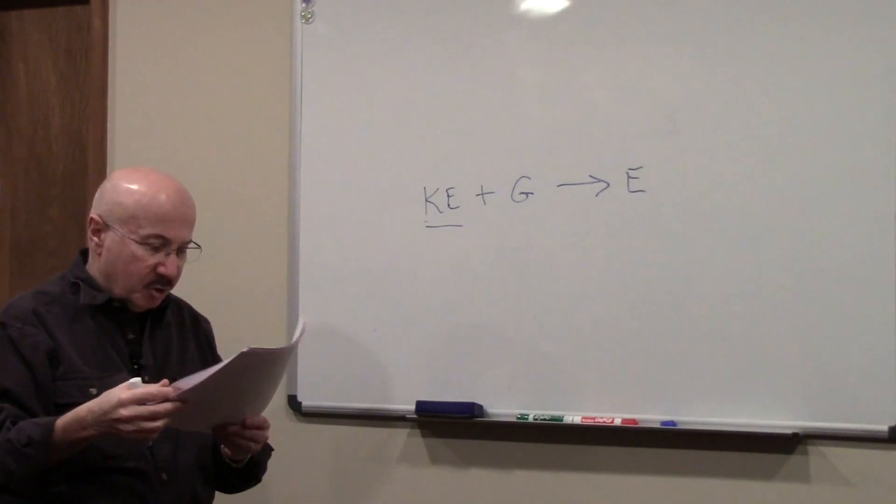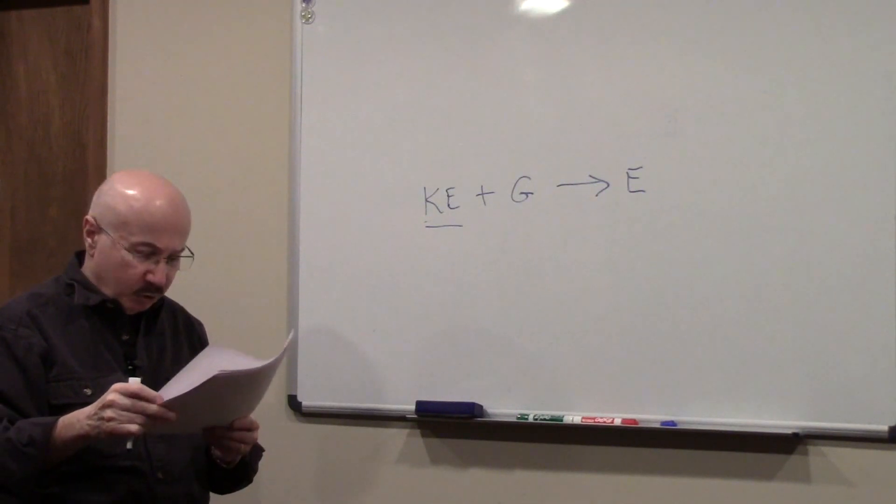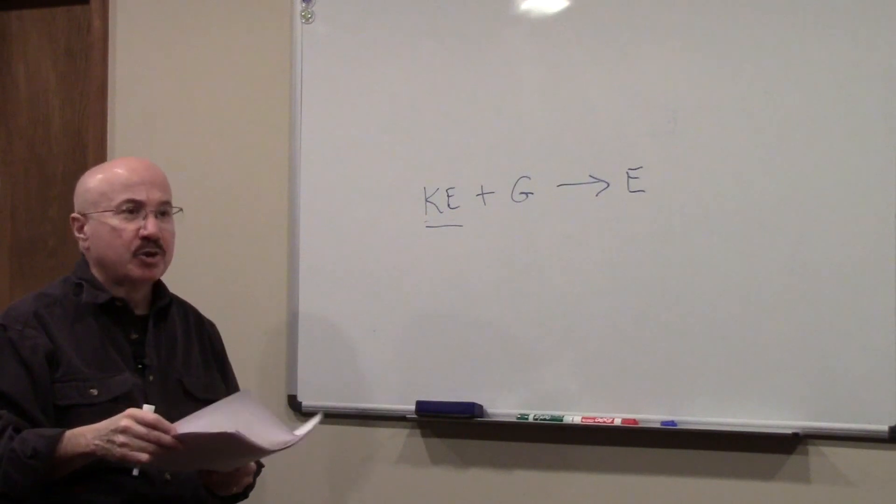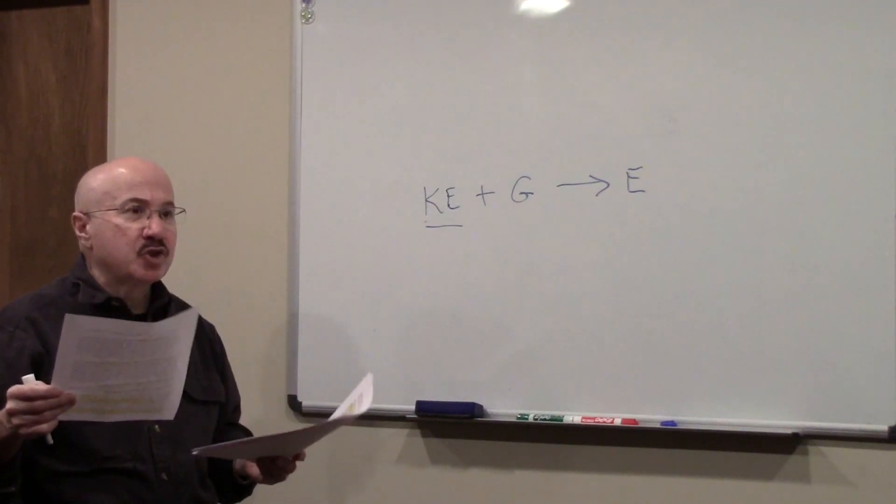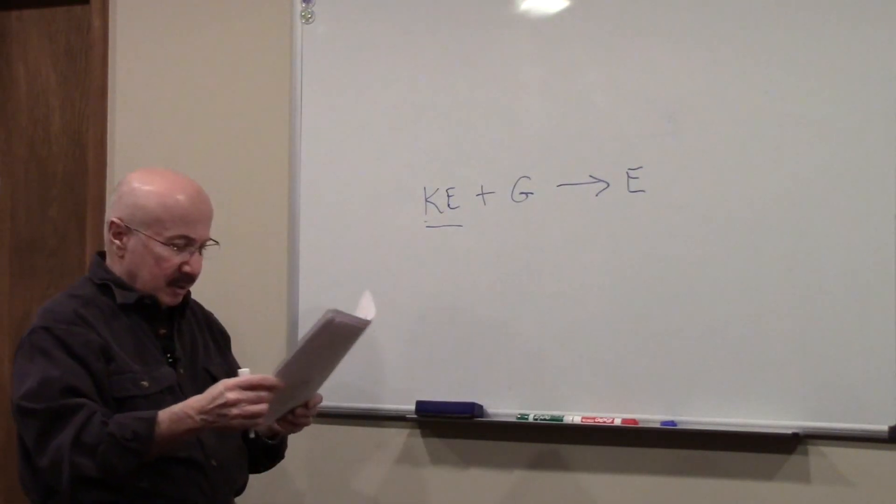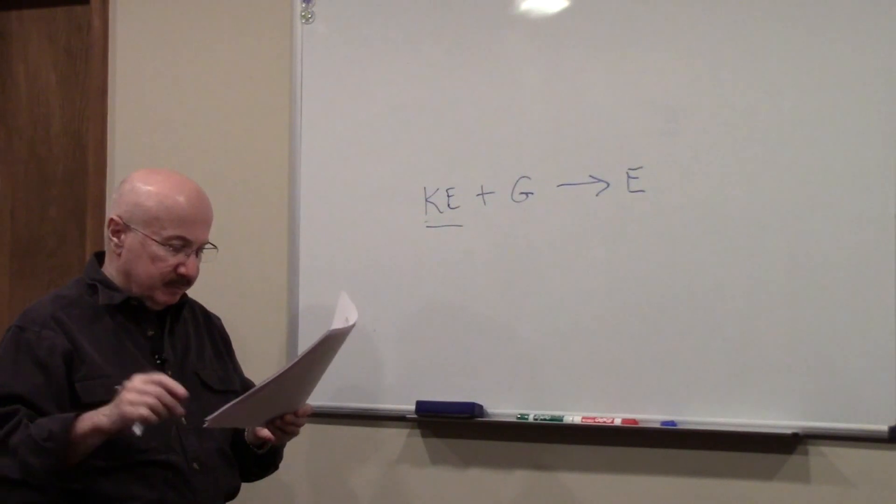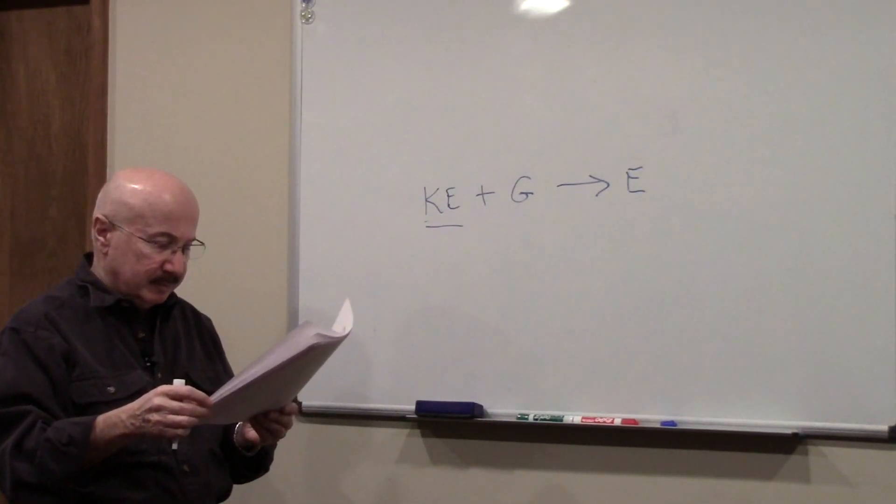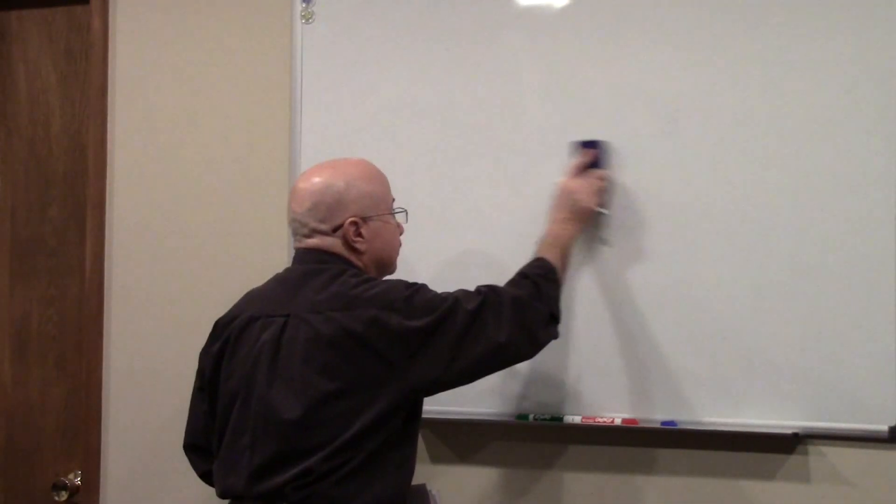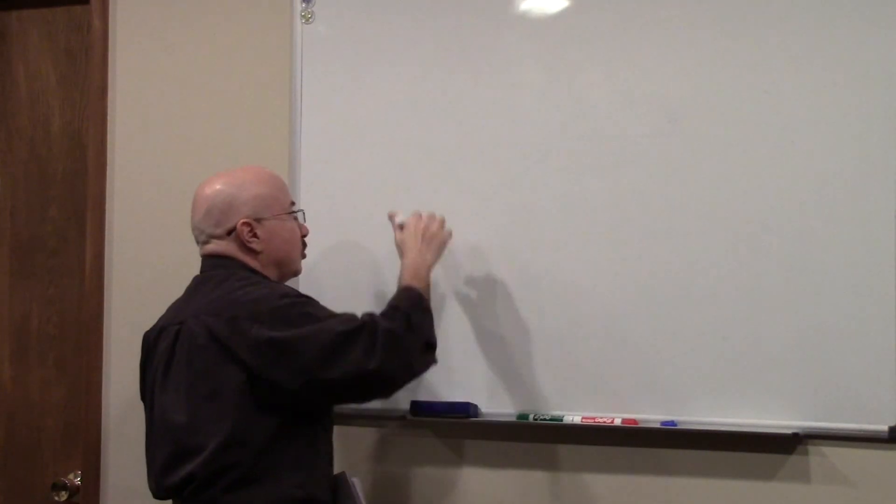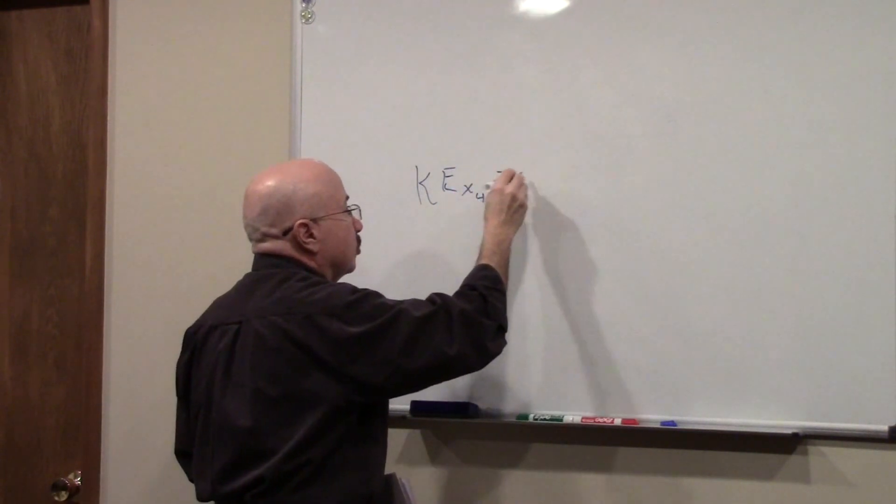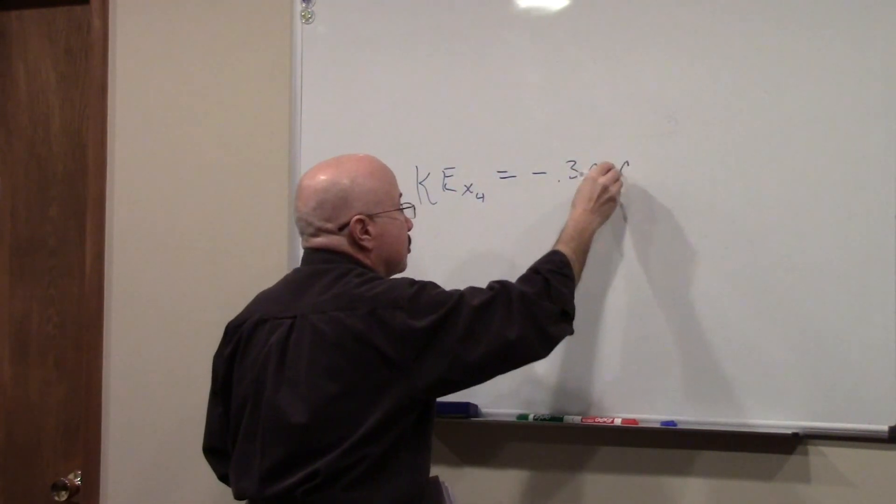So now let's use everything we've learned to interpret the existence equation and to interpret what it means to exist. Let's just start with that movement in the fourth dimension requires energy. Ke, this is the existence equation, equals minus 0.3 mc squared.